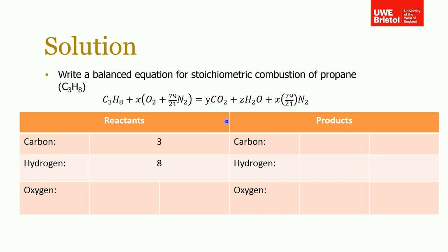We construct a row for each element. We could have one for nitrogen as well, but because we're saying nitrogen doesn't react, I don't think there's much point. So we've got carbon, hydrogen, oxygen.